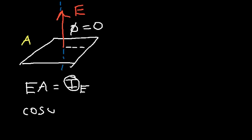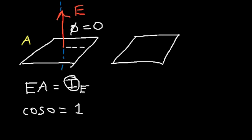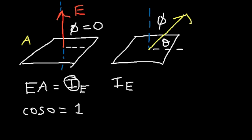What if the electric field is not perpendicular to the surface? Let's draw the normal line and the line parallel to the surface. The electric field is at an angle — this is angle phi between the normal line and the electric field vector. In this case the electric flux is equal to EA cosine phi.